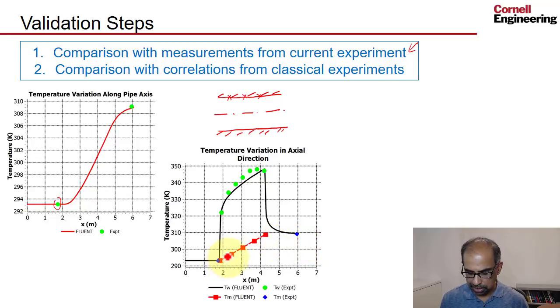And then this is the variation of the mixed mean temperature in the heated section and that's increasing nearly as it should when you have constant heat flux. So that's again a check on energy conservation.